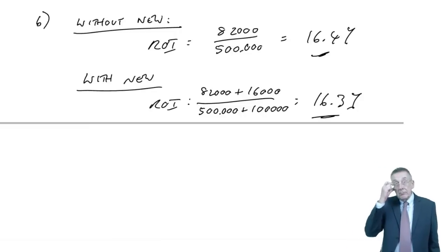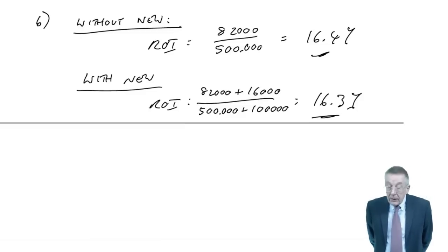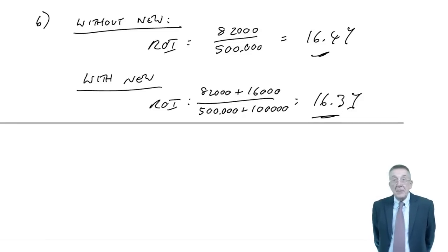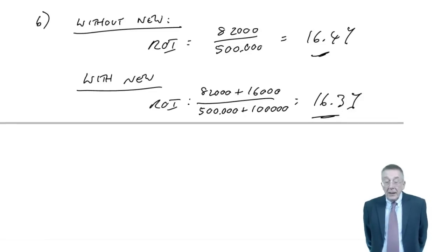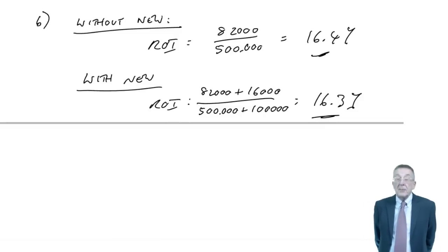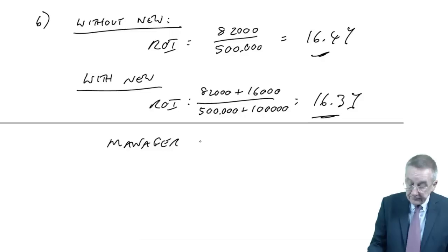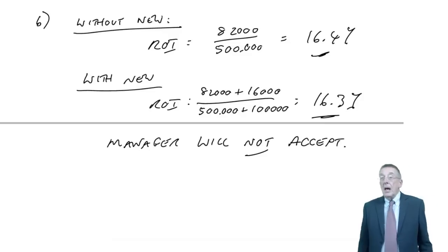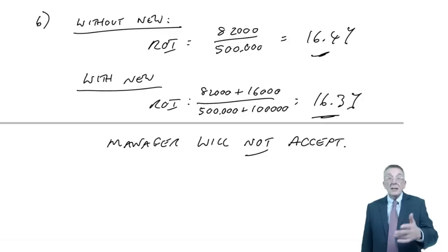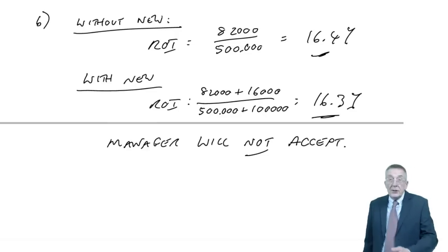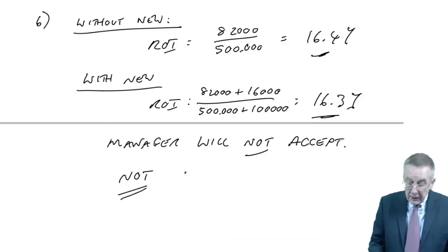Now we have a problem. Because if the manager is being measured on ROI, he'll only be rewarded if it increases. Why on earth would he take on this new investment when his performance measure goes down? The manager will not accept. The company still wants it — anything more than 15% makes the company happy — but the manager will reject it. The decision is not goal congruent.